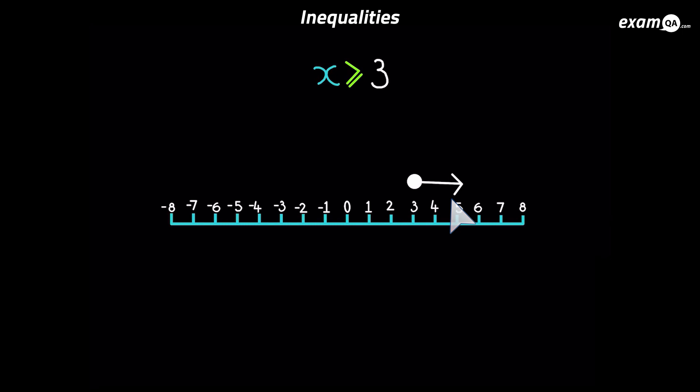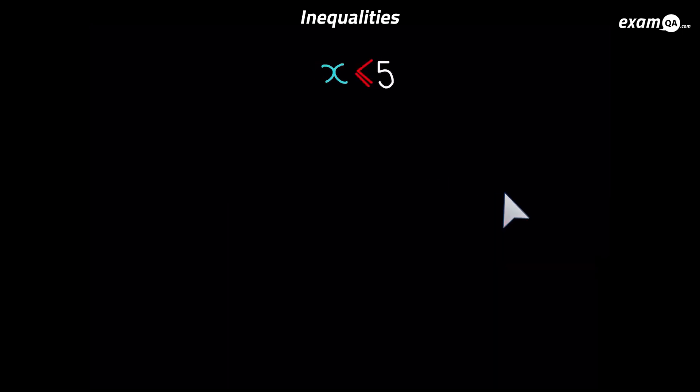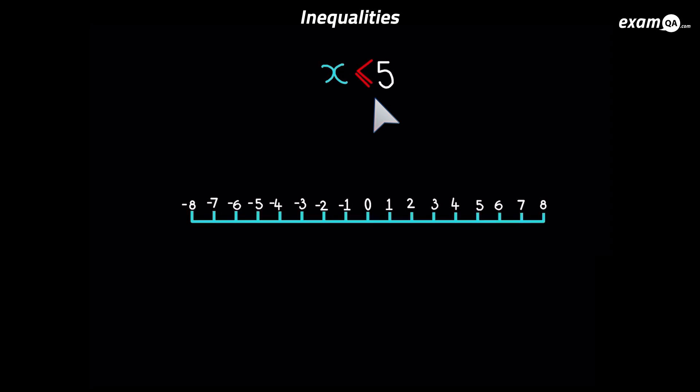Here we've got x is less than or equal to five. We're talking about numbers less than five or equal to five — so five, four, three, two, one, zero, minus one, minus two and so on, everything to the left of five. On the number line, put a filled circle on five and draw an arrow to the left to show all the numbers to the left.